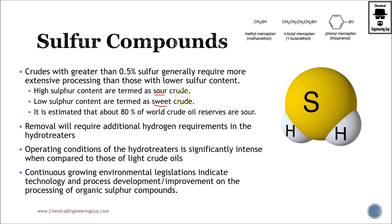Whenever we talk about sour crude oils, these have higher than 0.5% sulfur content. Whenever we say sweet crude, those have technically already had the sulfur removed. And whenever we say we need to sweeten that crude, it means this is a sour crude oil, and we've got to remove the hydrogen sulfide or sulfur content in order to ensure it becomes a sweet crude, and therefore can continue to form fuels. Now, 80% of the world reserves are now considered sour, so that is not an advantage for us. But we can ensure that we have the technologies to remove sulfur content.